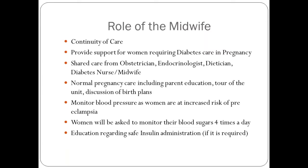Women who develop gestational diabetes are always at increased risk of developing pre-eclampsia, so their blood pressure should be monitored on a regular basis. Women who receive a diagnosis of gestational diabetes will be asked to monitor their blood sugars four times a day — on waking and then one hour after each meal. This is a big change to their lifestyle. They may also need education regarding the safe administration of insulin, how it can be administered, and how to store it safely, which would usually come under the remit of the diabetes midwife, but women may wish to discuss this with any midwife.